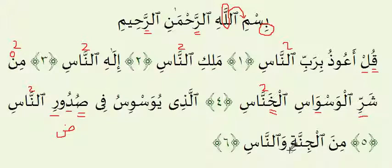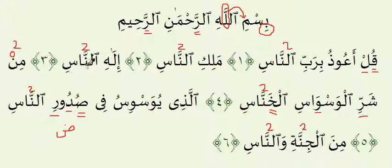Last ayah: Meenal Jinnati Wannaas. Make sure you have the E sound for the Meem. There are two counts on each Nun — two Ghunnahs. One thing you'll notice in this Surah is that there are a lot of Ghunnahs related to the Noon with a Shaddah on top. For every single Ghunnah of this type, hold it for two counts. The most correct recitation has each Ghunnah held for the exact same length of two counts. Try your best not to shorten or elongate the Ghunnahs beyond two counts.